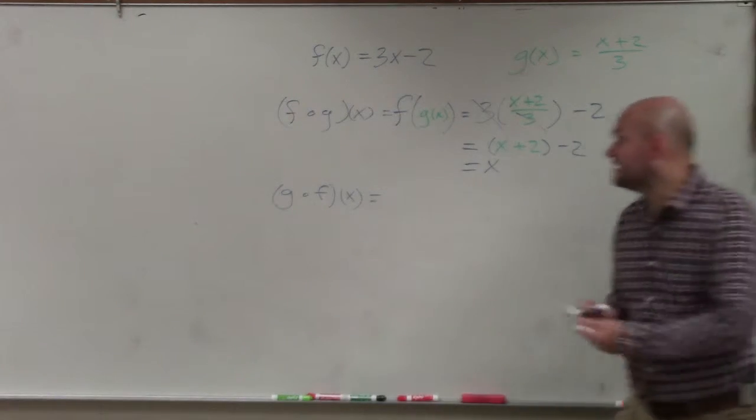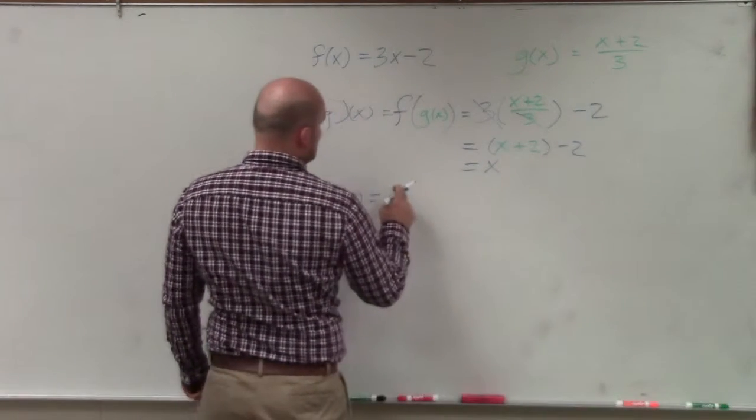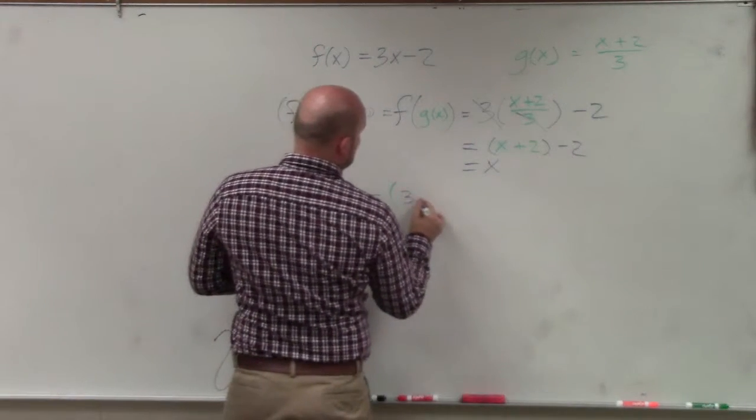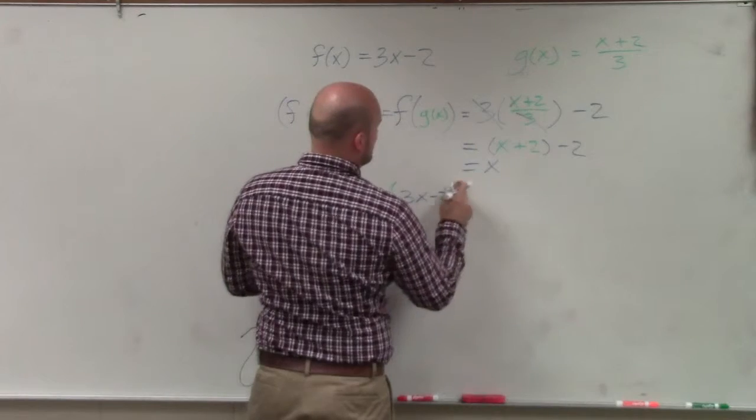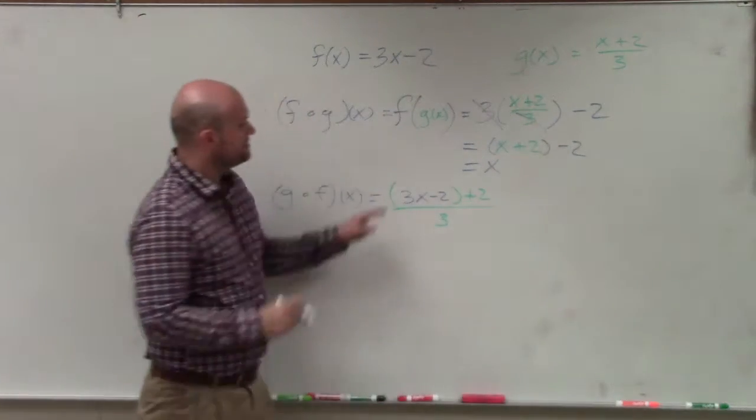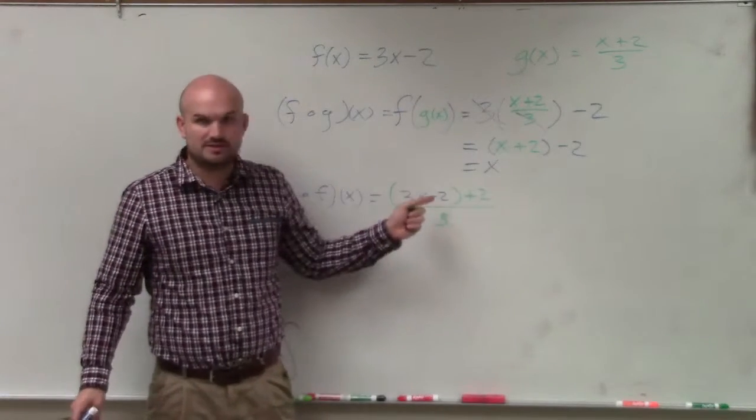Then to do g of f of x, I'm now going to take my f of x function and then take my g of x function and plug in f of x. So that would be 3x minus 2 plus 2 all over 3. Does everybody see the difference of plugging one function into the other function?